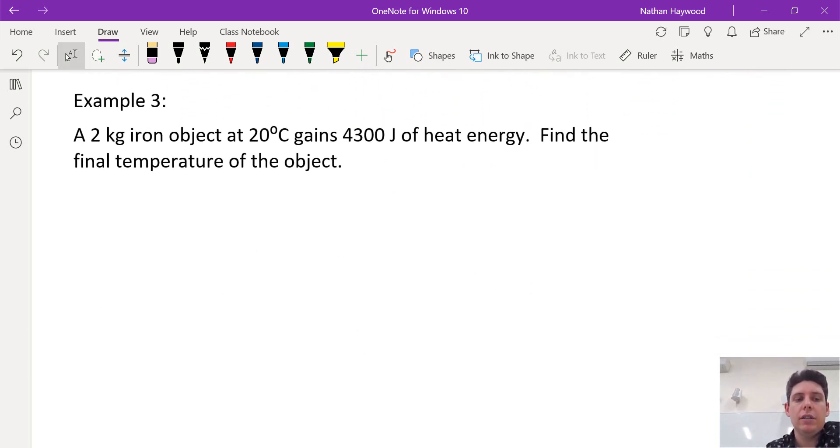All right, question three. So we have a two kilogram iron object. So we have the mass. And we have a change in temperature. Sorry, no. We have the initial temperature. And it's gaining 4,300, which is Q.